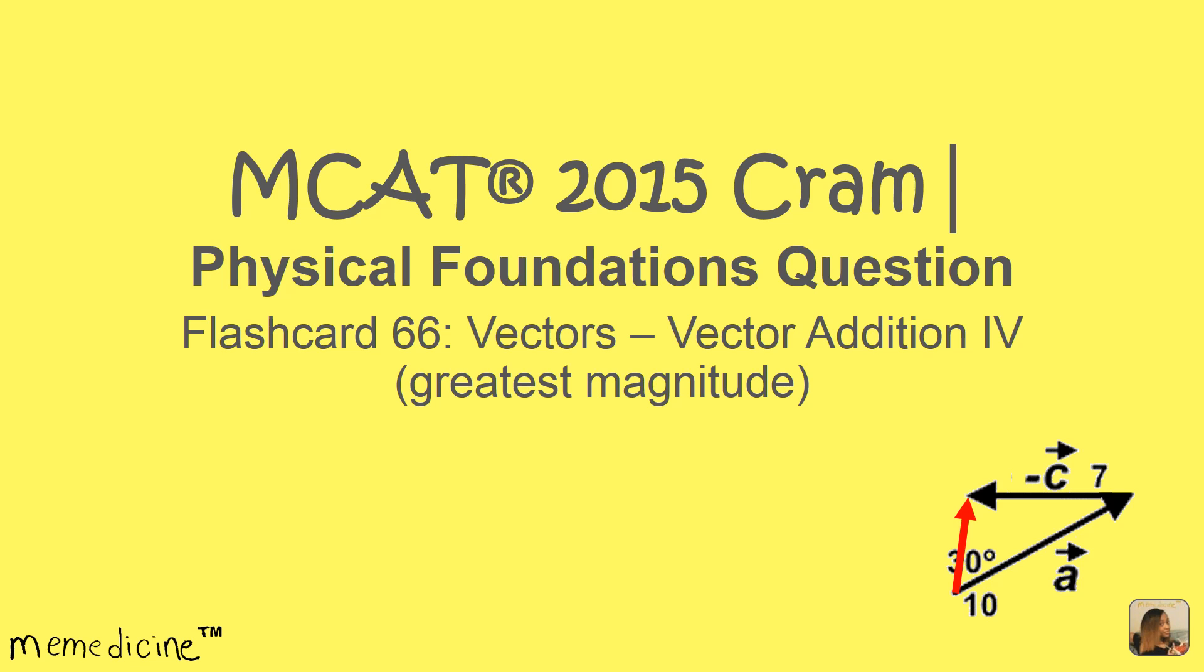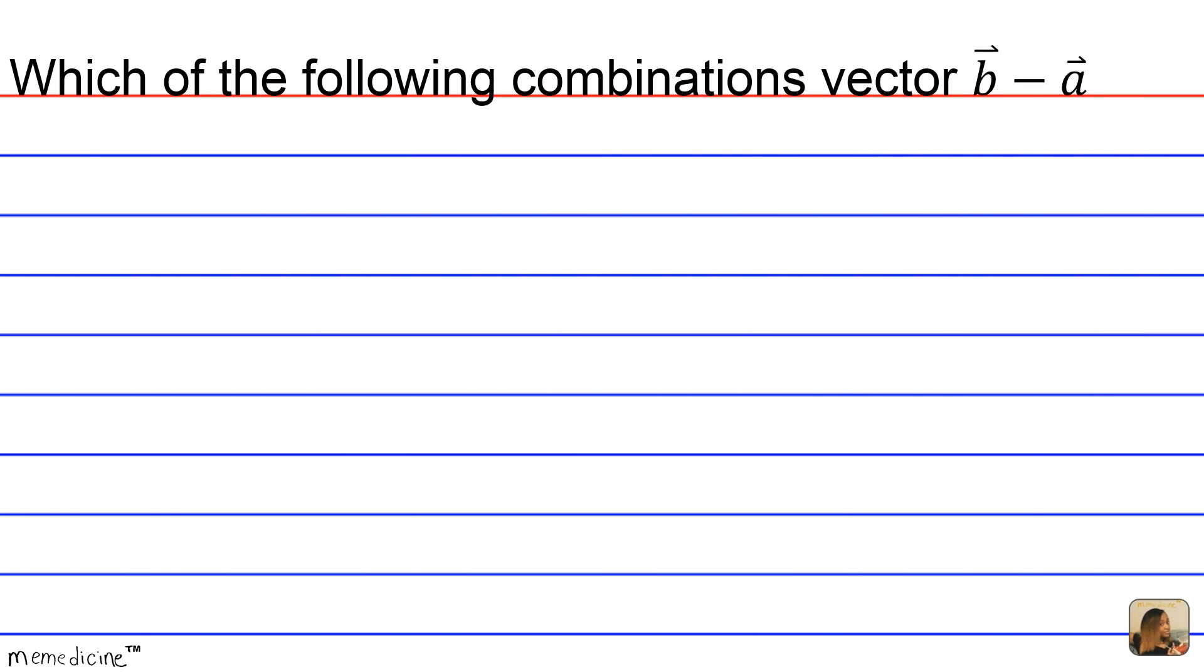Which of the following combinations of vector B minus vector A will result in the greatest magnitude? And just note that vector B is 10 units long and vector A is 15 units long.